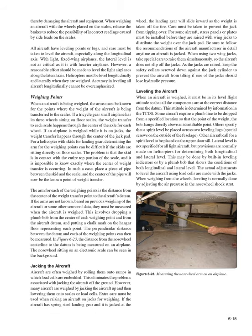For a helicopter with skids, determining the arm for weighing points can be difficult when skids sit directly on floor scales, since it is impossible to know exactly where the center of weight transfer is. In such a case, place a piece of pipe between the skid and the scale—the center of the pipe becomes the known weight transfer point. The arm for each weighing point is the distance from the center of the weight transfer point to the aircraft's datum. If arms are not known, drop a plumb bob from each weighing point and from the datum, make chalk marks on the floor, and measure the distances.